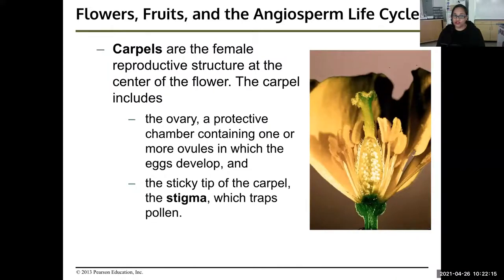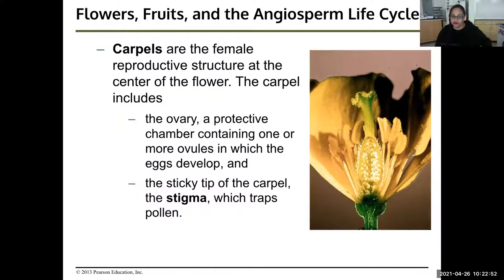Carpels are the female reproductive structures at the center of the flower. The carpal includes the ovary — you can tell which part is the ovary because of all the tiny eggs in there, called ovules, containing one or more ovules in which the eggs develop. The sticky tip of the carpal is called the stigma, and that's what traps the pollen. Flowers can self-fertilize, but mixing pollen creates variation in color and characteristics.